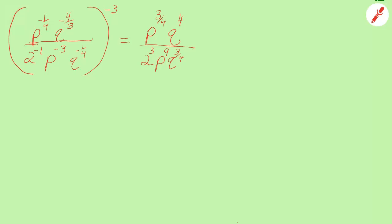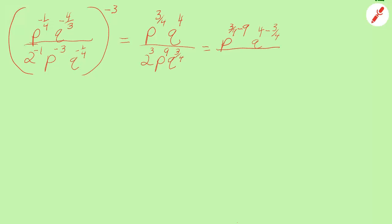Now I'm going to use the quotient rule. Since I have p to the 3/4 in the numerator and p to the 9th power in the denominator, in the numerator I'm going to write p to the 3/4 minus 9 power. Since I have q to the 4th power on top and q to the 3/4 power on the bottom, I'm going to write q to the 4 minus 3/4. Meanwhile in the denominator I have 2 to the 3rd power, which is 8.